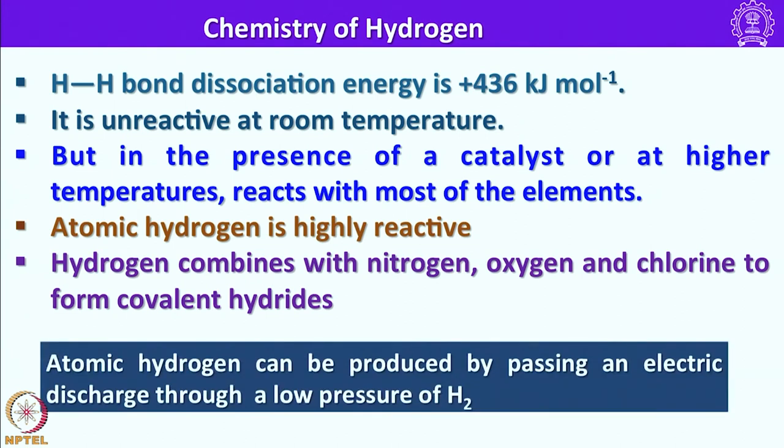Atomic hydrogen can be produced by passing an electric discharge through a low pressure of hydrogen. Atomic hydrogen is very reactive and when it combines with other elements it usually forms three types of chemical compounds: it can lose an electron to form H+, gain an electron to form H−, or share the electron with another element to form a covalent bond.